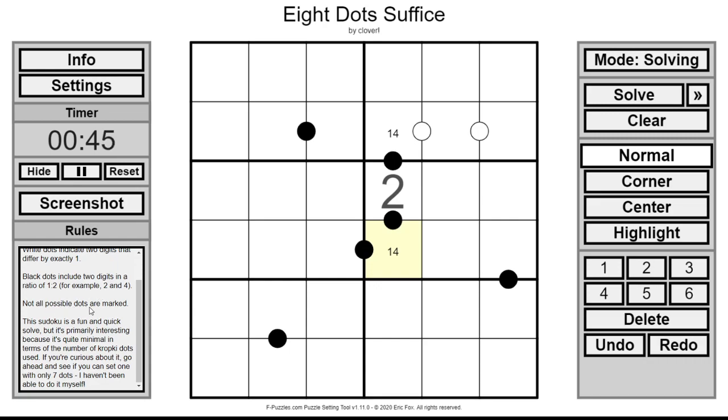And not all possible dots are marked so there's no negative rule. Now, whether this is a one or a four, I think it must be a two connecting.